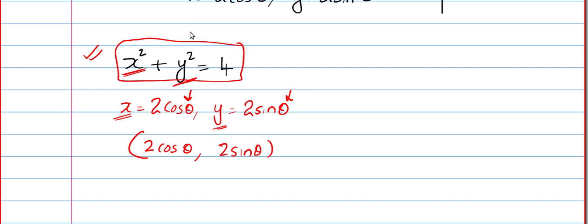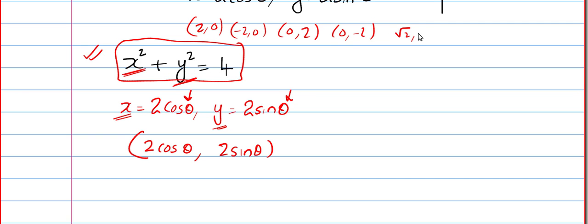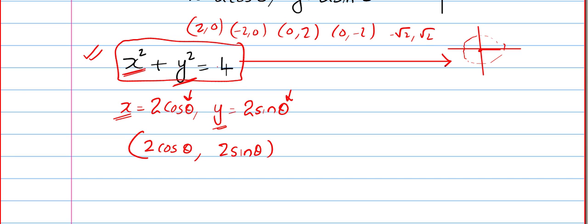You can choose points like (2, 0) which balances the equation: 2² + 0² = 4. You can choose (-2, 0), (0, 2), (0, -2), (√2, √2) — because √2² + √2² = 4. There are millions of points, and once you plot all of them you get the circle with center at the origin and radius 2. That is how the Cartesian equation works.